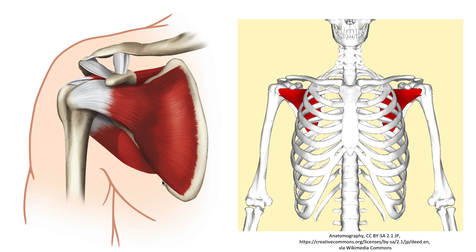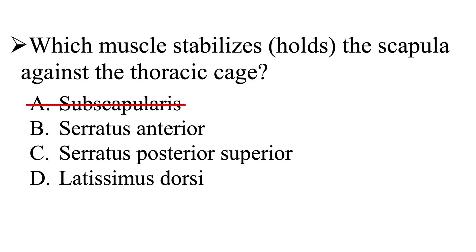Let's take a look at the subscapularis — this is the anterior view. The subscapularis originates at the subscapular fossa and inserts onto the lesser tubercle of the humerus. Although this muscle appears to be sandwiched between the thoracic cage and the scapula, it does not attach to the thoracic cage at all. So the subscapularis does not stabilize the scapula against the thoracic cage — A is not the correct answer.